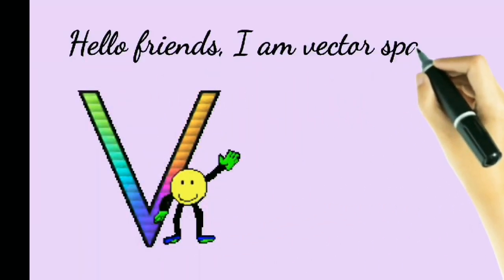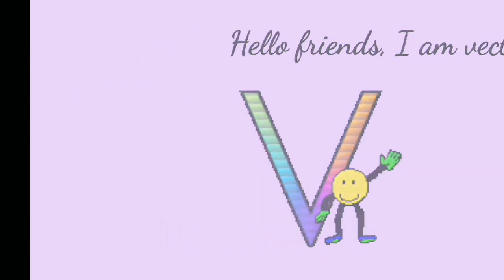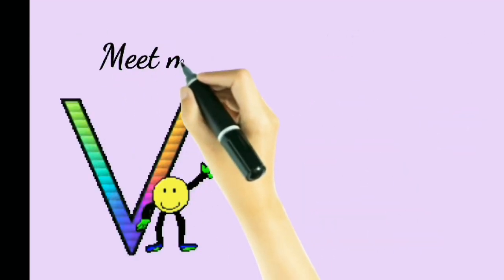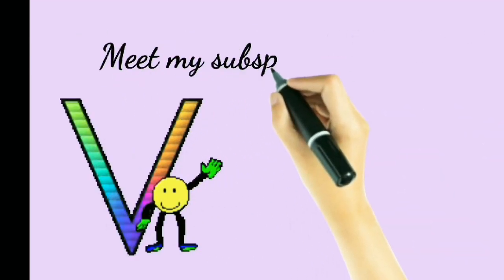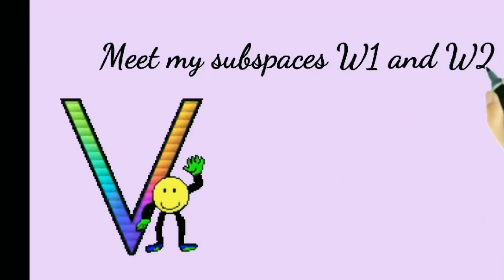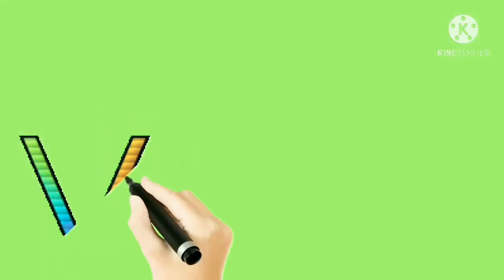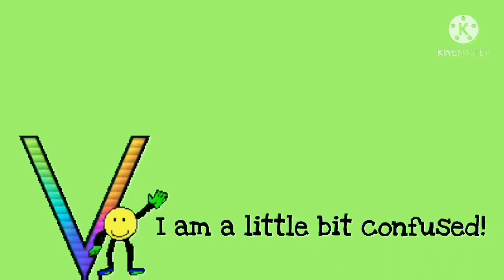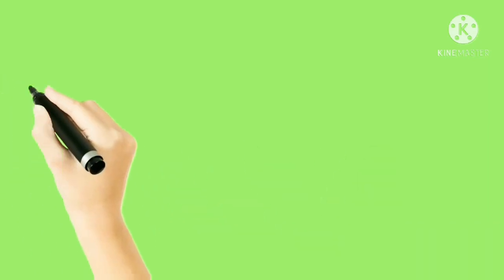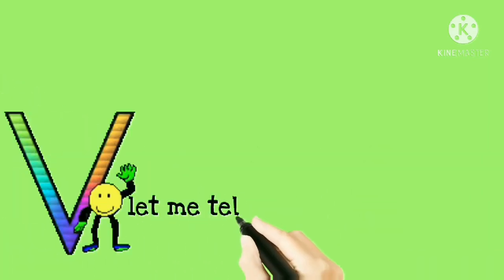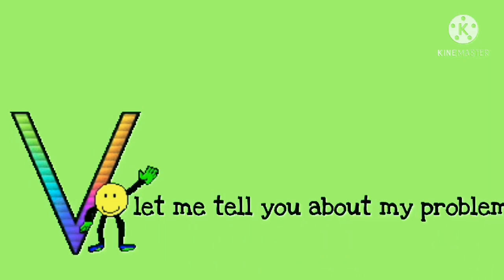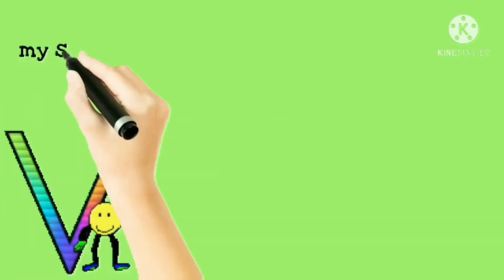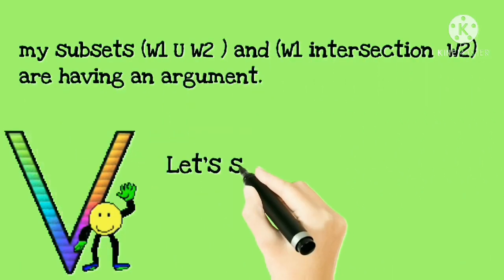Hello friends, I am VectorSpaceVF. Meet my subspaces W1 and W2. I am a little bit confused — let me tell you about my problem. My subspaces W1 union W2 and W1 intersection W2 are having an argument. Let's see their problem.